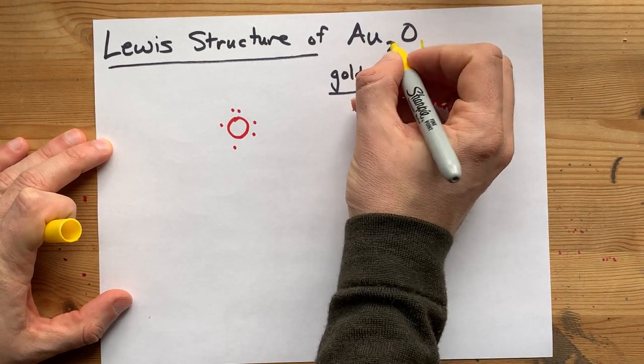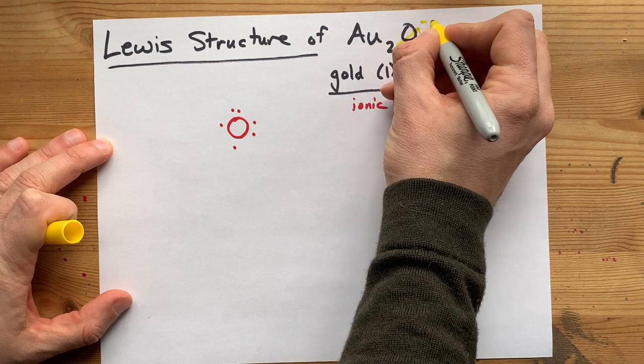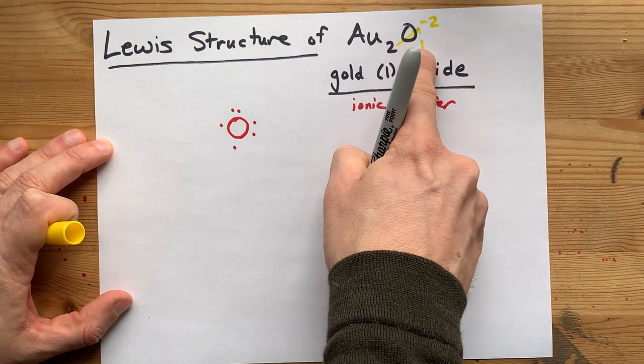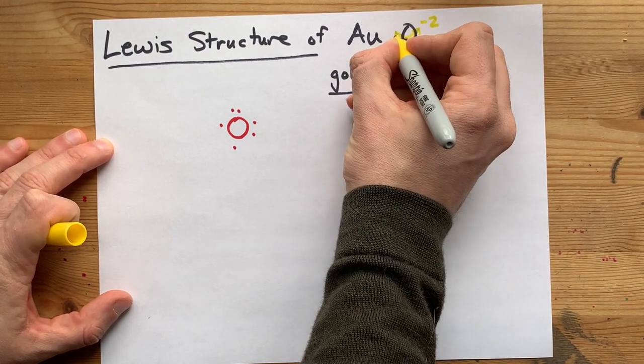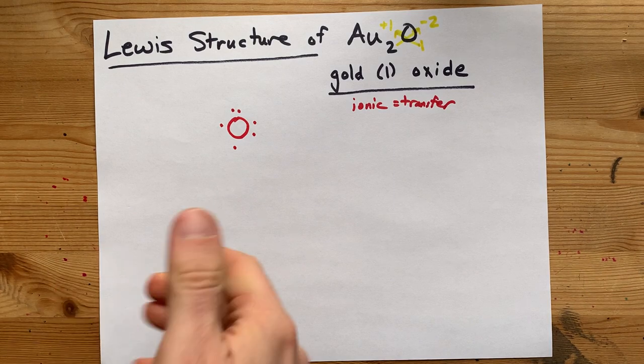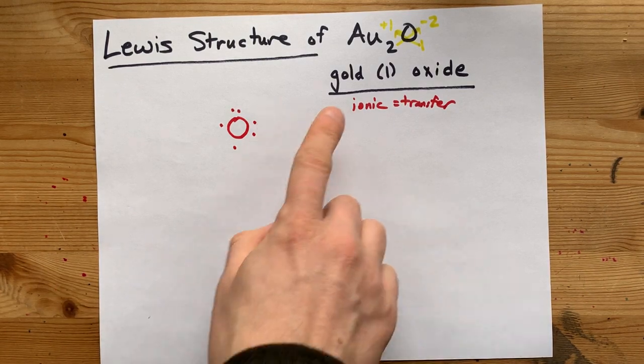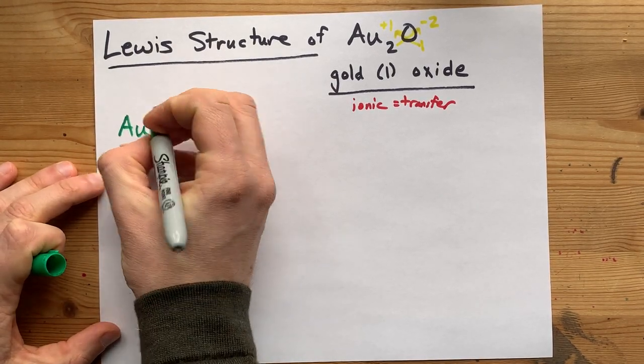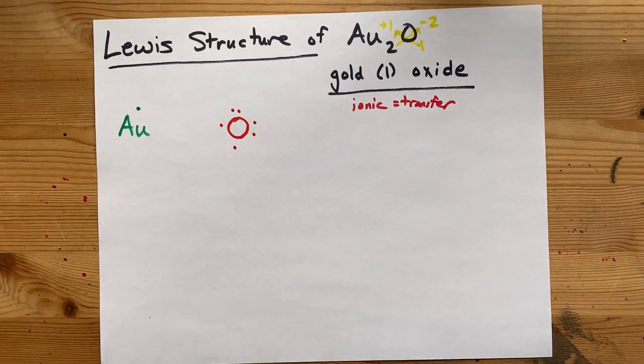This 2 in the formula had come from the charge that was on oxygen, a -2 charge. And the 1 that wasn't written on O came from the charge that had been on gold. Gold here brings one valence electron with it, so I'm going to draw Au with one electron.